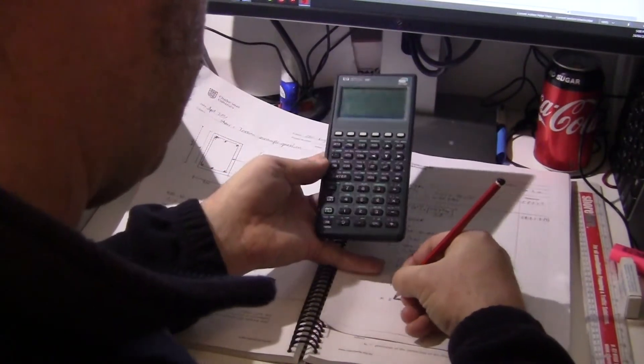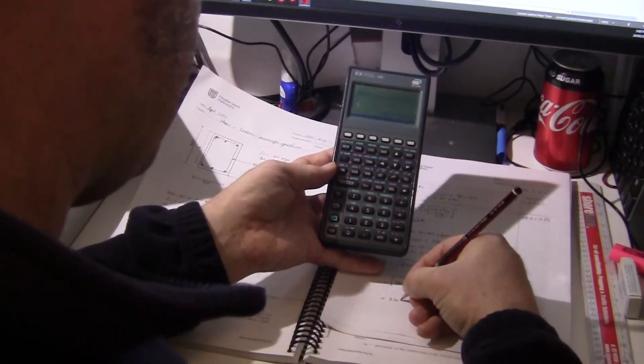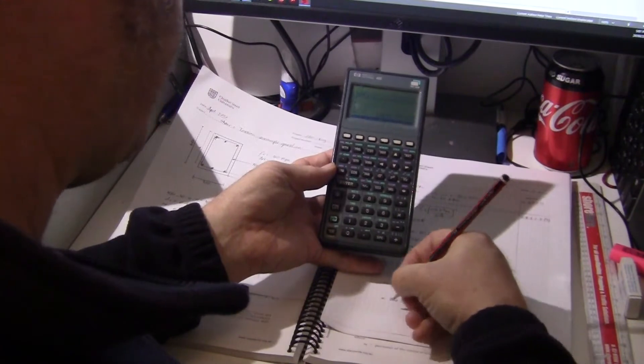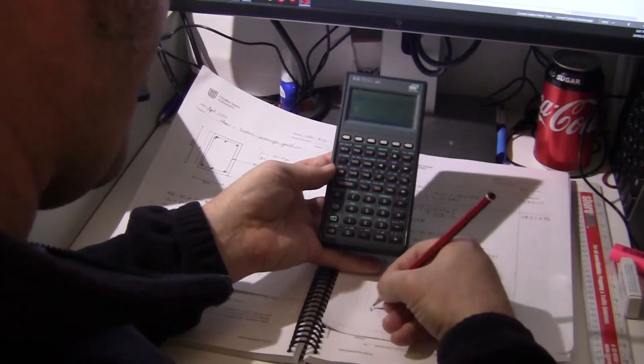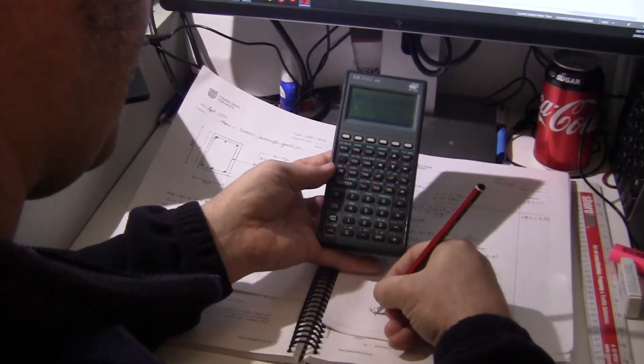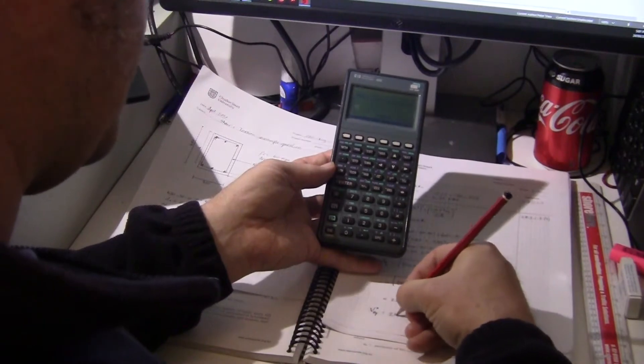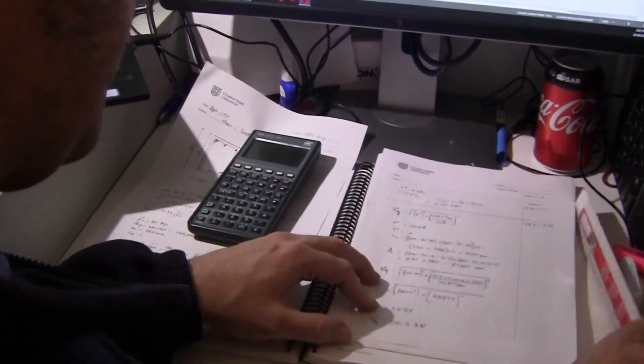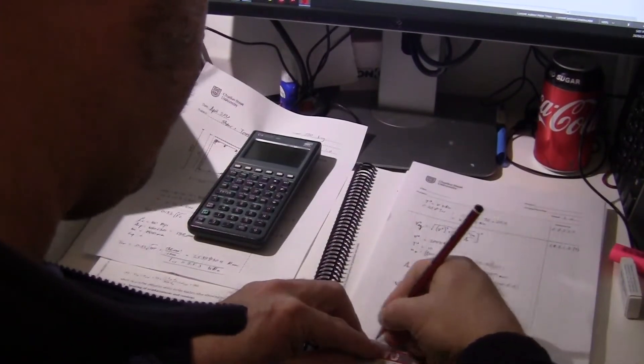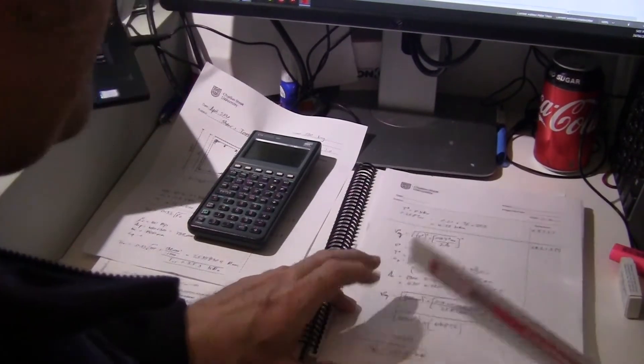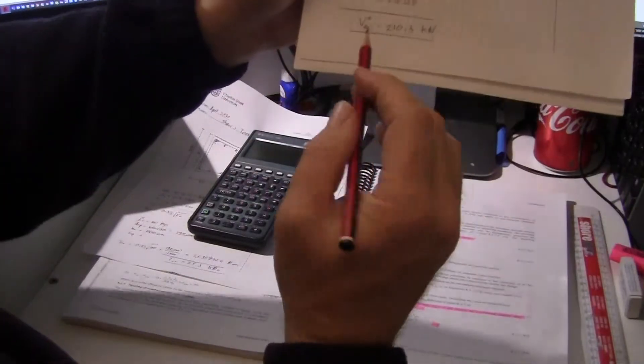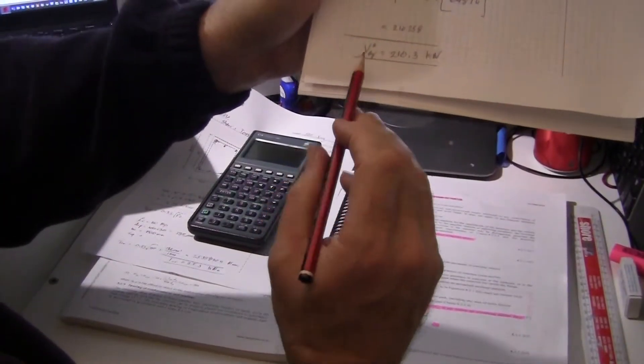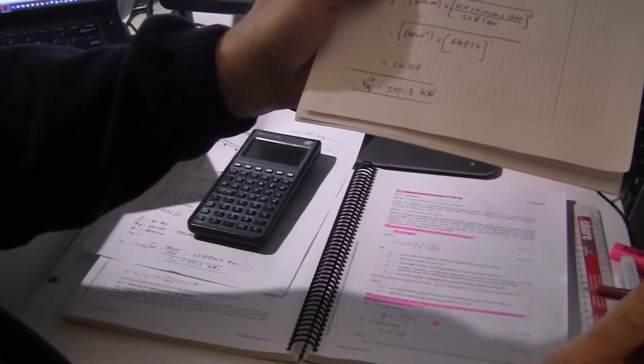210,258. So V, let's put that back into kilonewtons now. V equivalent is 210.3 kilonewtons. That's an important number. Now V star equivalent is 210.3 kilonewtons.